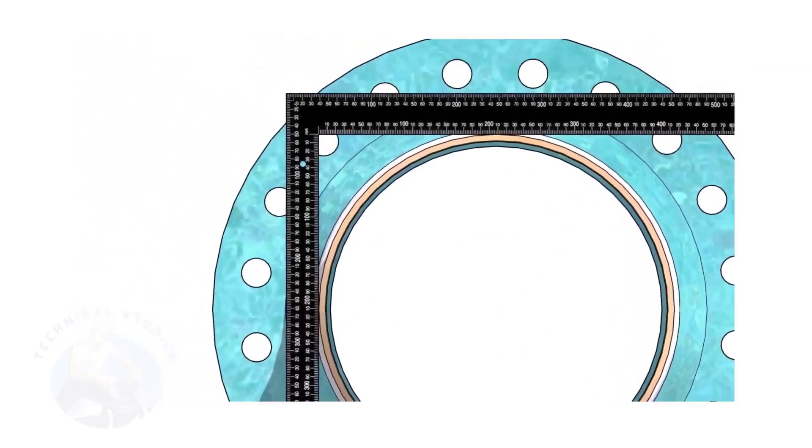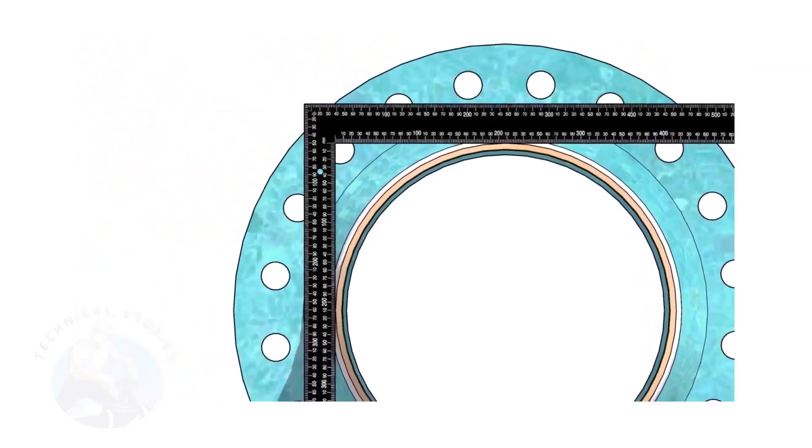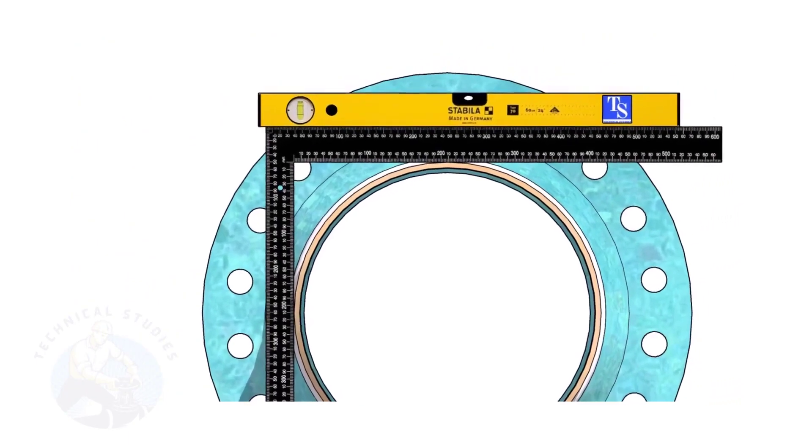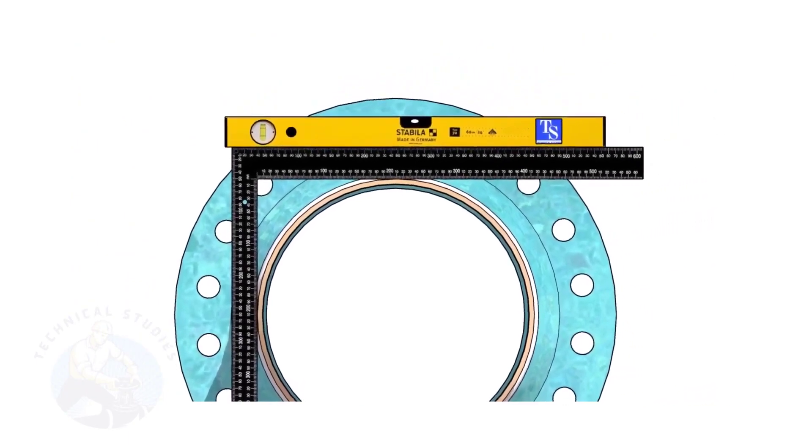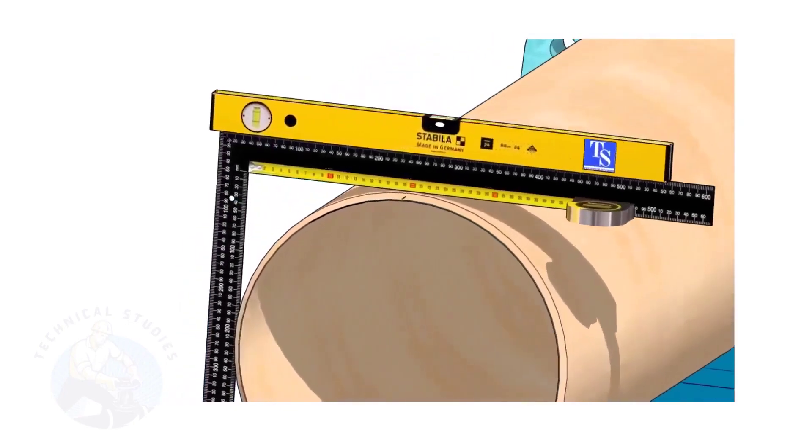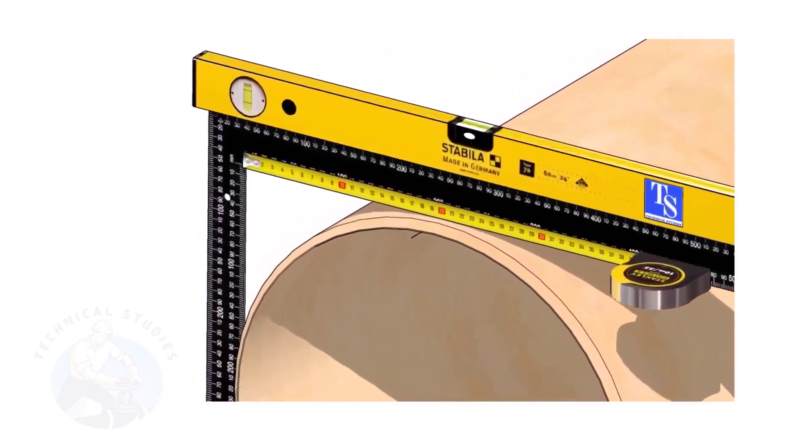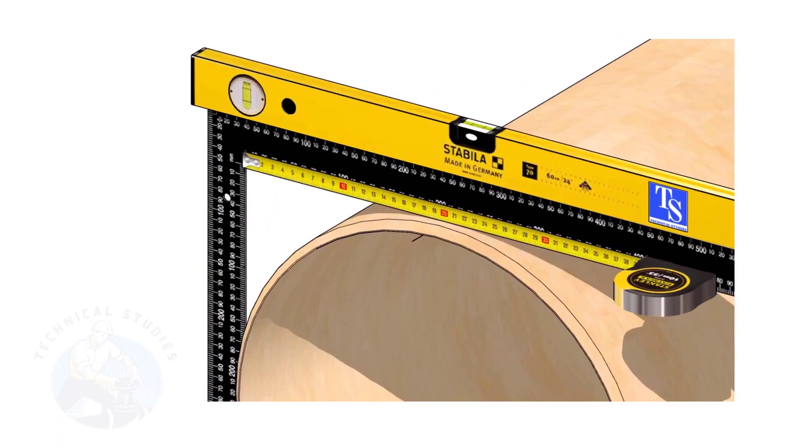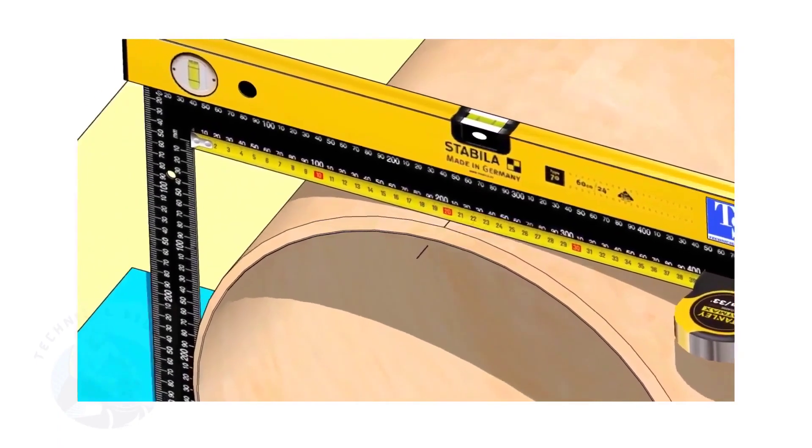Hold a large right angle on the pipe as shown. Put a spirit level on the right angle and correct the top level. Mark half OD of the pipe on the top side. Here, the half OD is 203 millimeters.